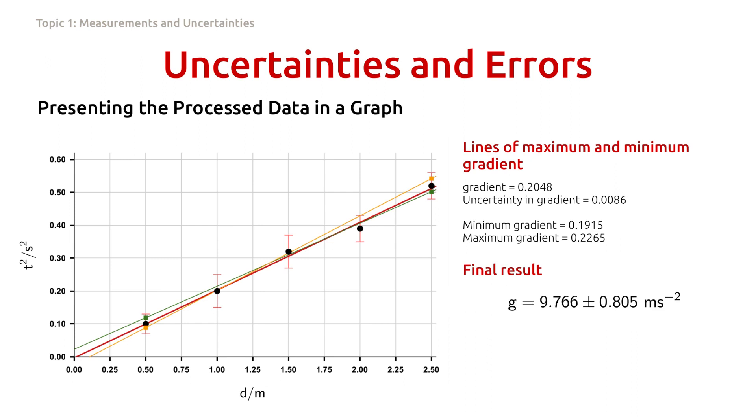And finally, the value of g obtained graphically is written as 9.766 plus minus 0.805 meters per second squared. Again, the uncertainty is frequently rounded to one significant figure. The value of g is also rounded so that it is consistent with uncertainty. Thus, the value of g is written as 9.8 plus or minus 0.8 meters per second squared.